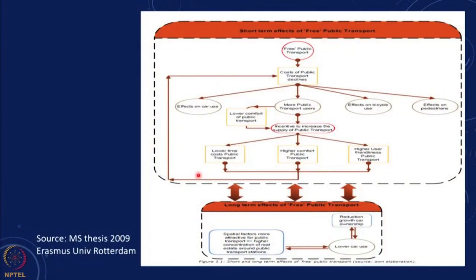A schematic from a master's thesis shows the impacts of free public transport: the cost of transport would decline, leading to more public transport users and increased bicycle and pedestrian use; it would reduce car usage; there would be pressure on the public transport system to improve; costs would go down with higher volumes; and long-term effects include reduction in car ownership. This is one example of analyzing air quality and the transport system.